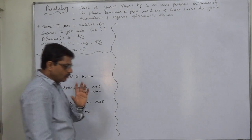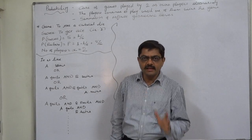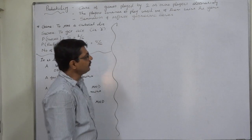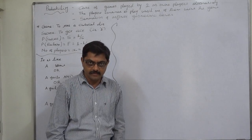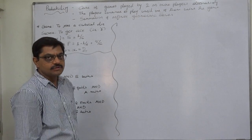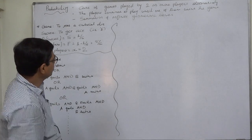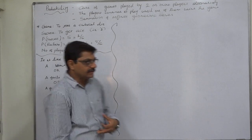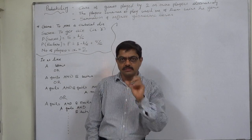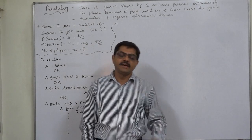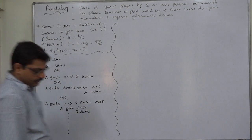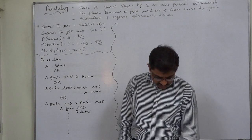There are two or more players who play the game alternatively in succession, and the game is continued until one of the players wins. That means the game can be continued indefinitely until at least one player wins. Since the game could be continued indefinitely, at the time of calculation there will be a summation of an infinite geometric series — how that works we are going to discuss now.